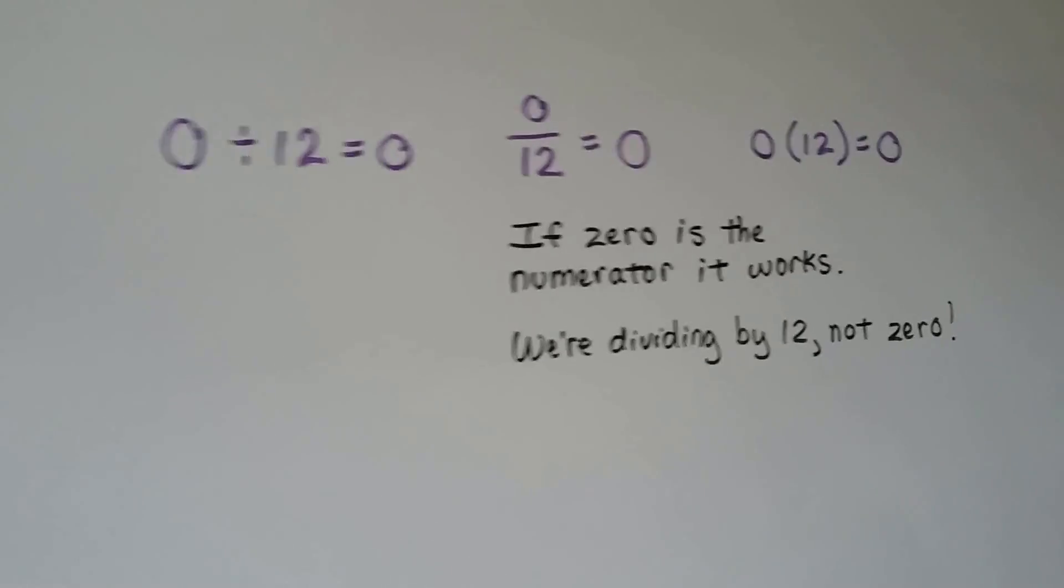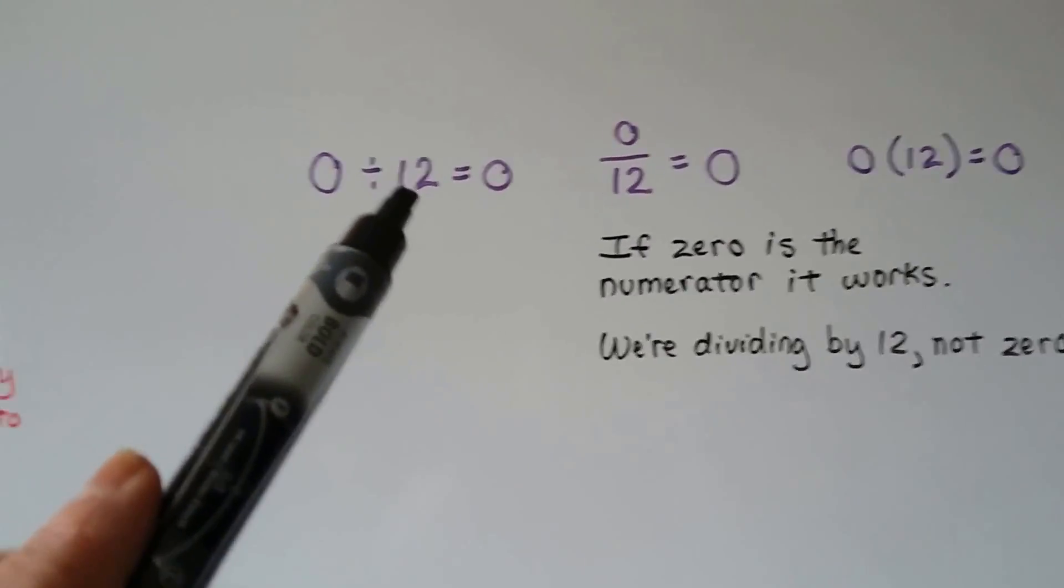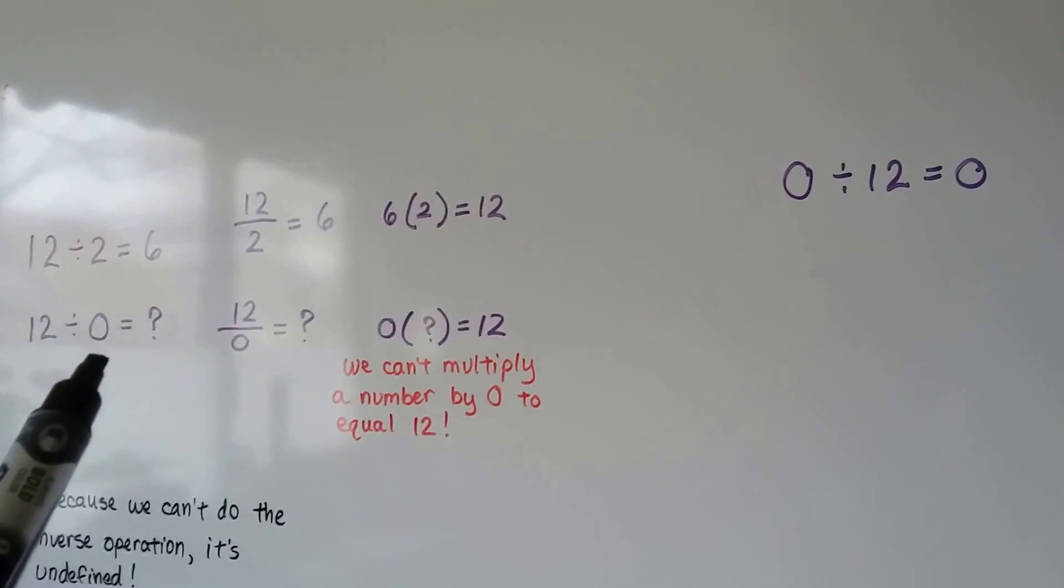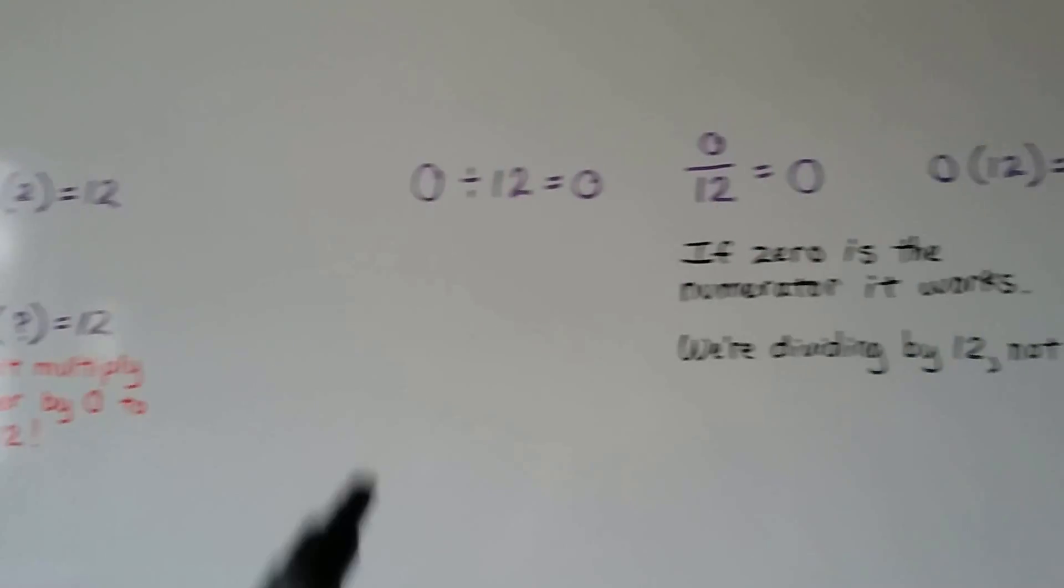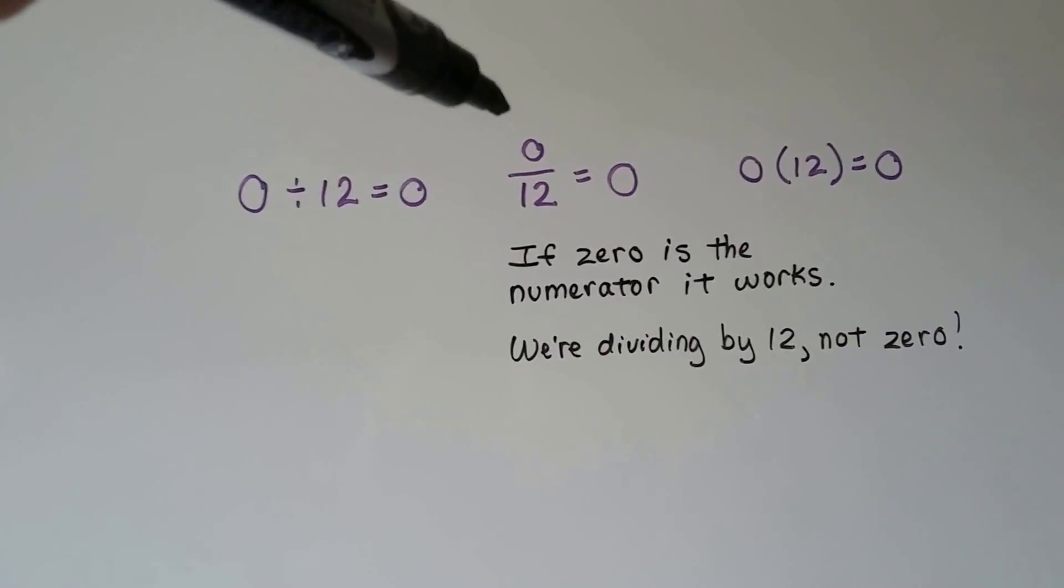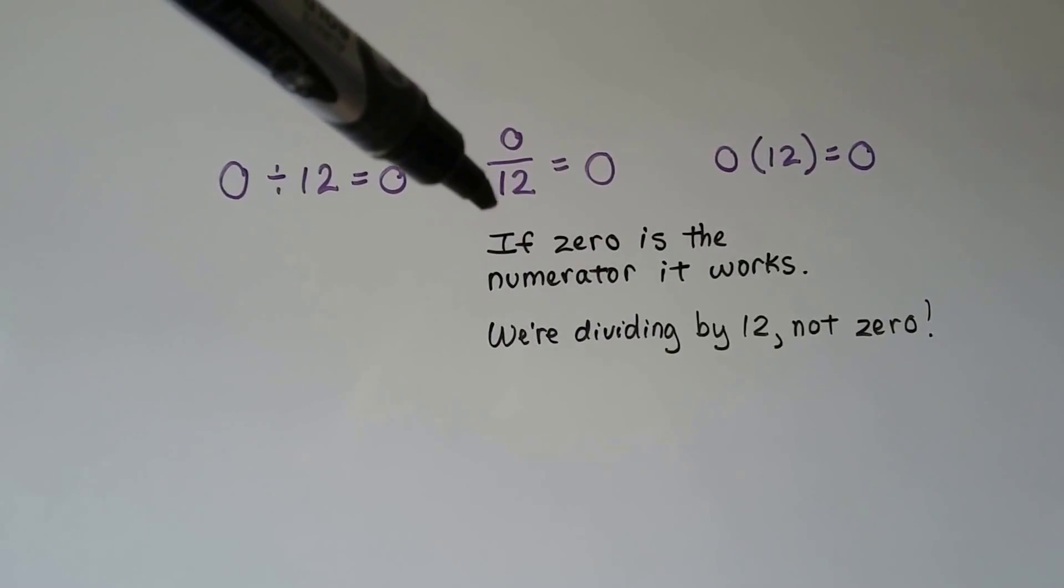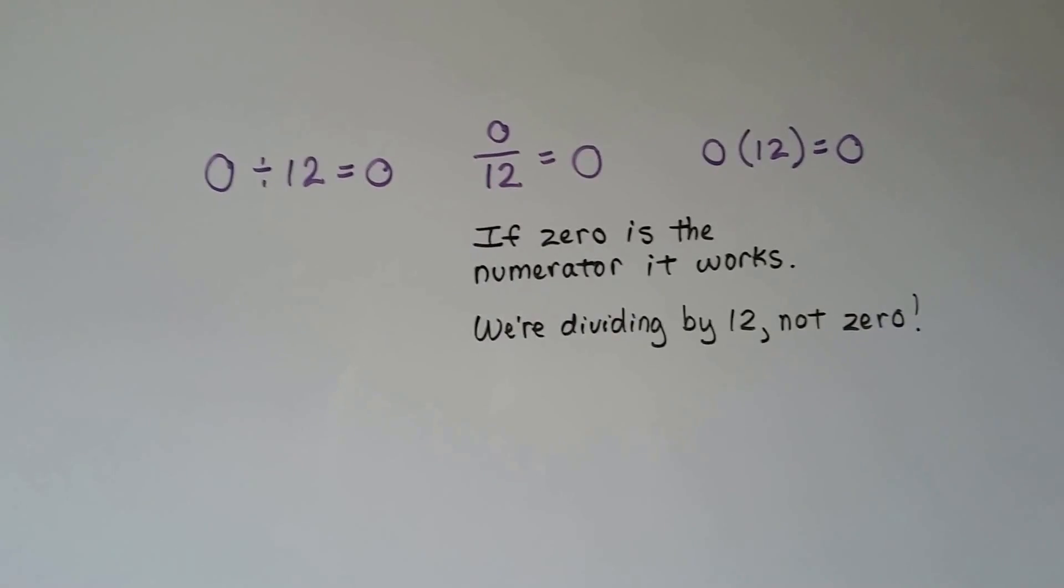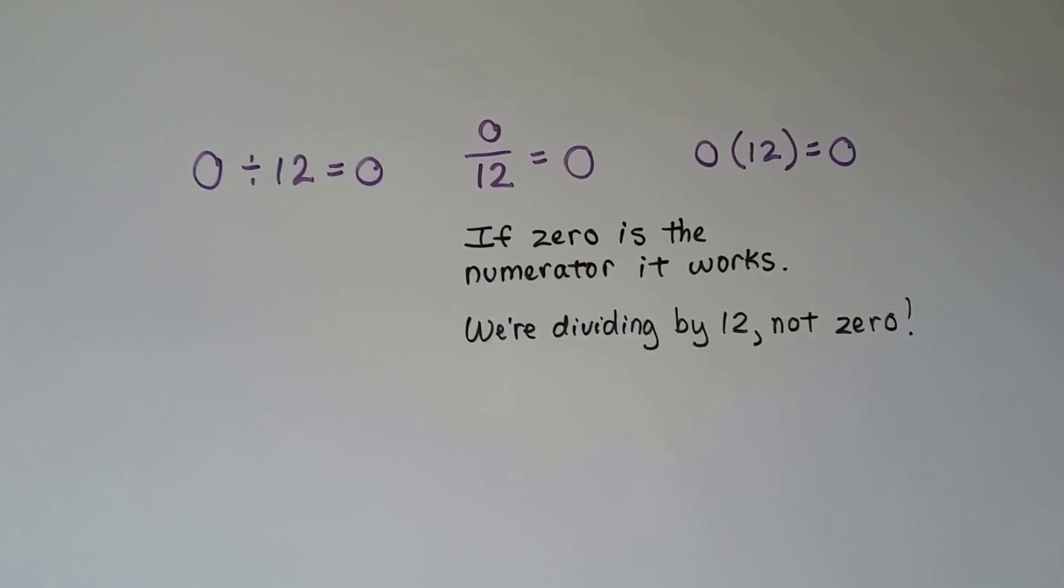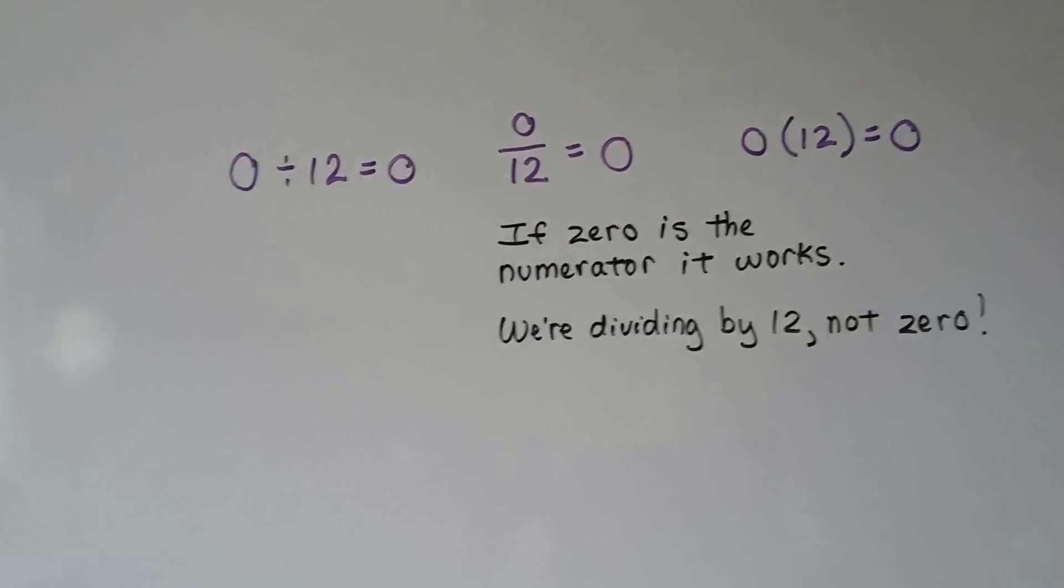Now what happens if 0 is the numerator? Well, that's different. In this case, we're dividing it by 12. In this case, we were dividing by 0. If we write 0 divided by 12 like this, with 0 as the numerator, we can do the quotient times the denominator and get the numerator. It does work. See? So that's okay. Zero as a numerator is okay. It's just going to equal 0.